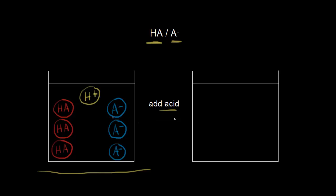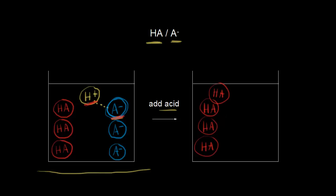But we do in our buffer solution — we have A minus, we have our base. The base is going to pick up this proton, and H plus and A minus are going to form HA. So we're going to make more of our weak acid. We started out with some weak acid, and then we're going to make more, because H plus and A minus give us HA. We're using up one A minus, so we're decreasing the concentration of A minus. But what we've done is effectively removed protons from solution, and that's how a buffer is able to resist a change in pH when you add acid.